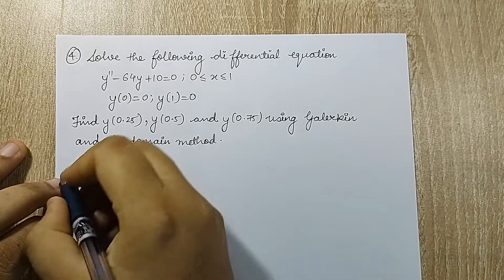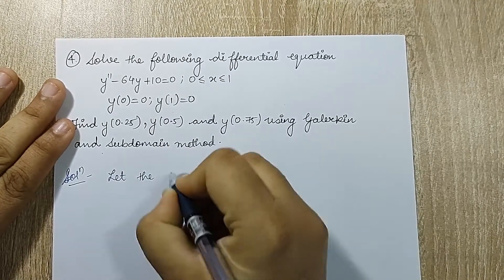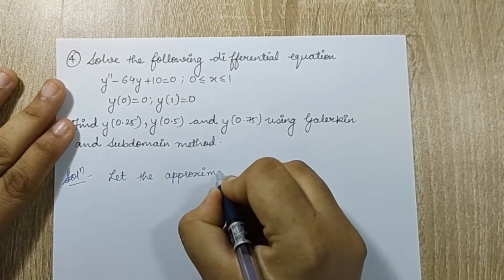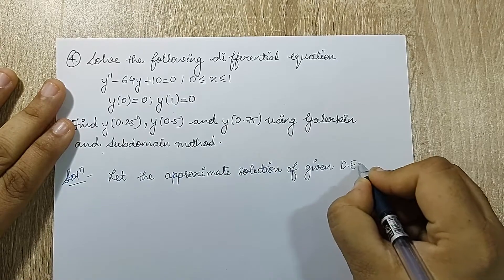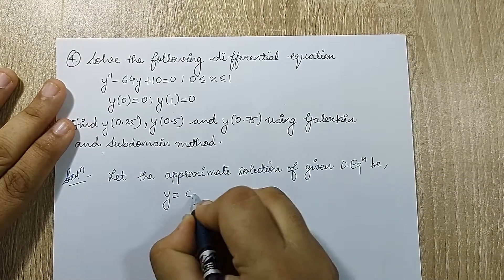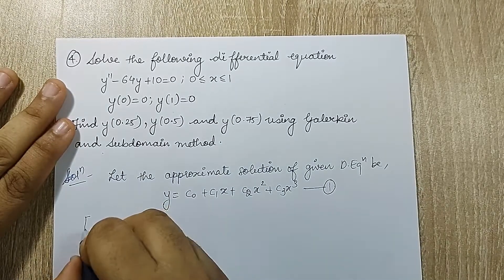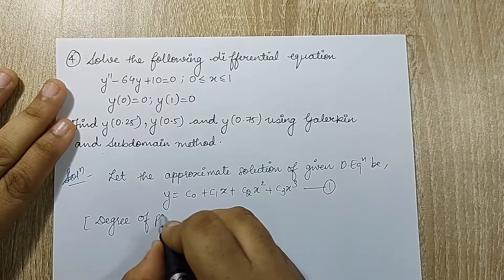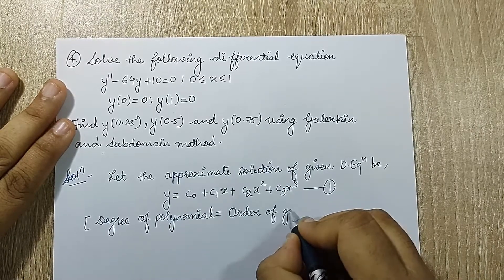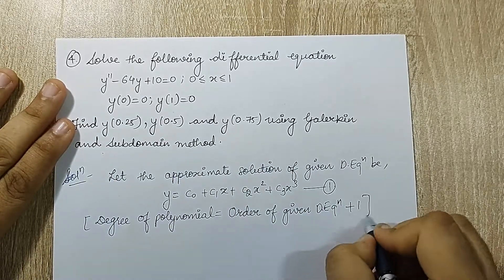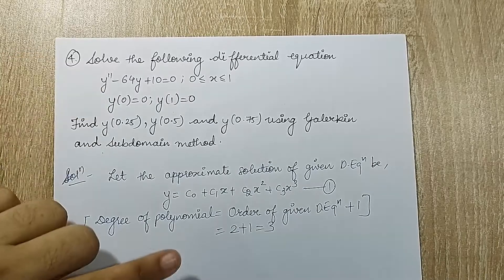In this question I am supposed to use only two methods. I will start the same way as I have done in the previous numerical. Let the approximate solution of the given differential equation be y equal to c0 plus c1*x plus c2*x squared plus c3*x cubed. This is equation 1. The degree of polynomial equals the order of the given differential equation plus 1, which is 2 plus 1 equal to 3. y double dash means d squared y by dx squared.